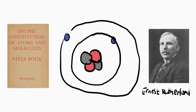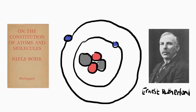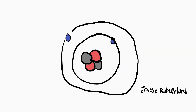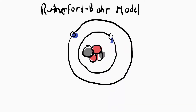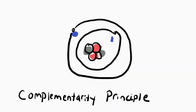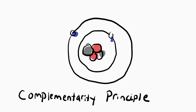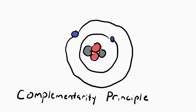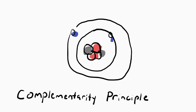Because Niels Bohr built off Rutherford's theories, this depiction of the atom is often called the Rutherford-Bohr model of the atom. Another great accomplishment by Bohr was his concept of complementarity. Although a lot less people are familiar with the complementarity principle than his atomic model, this theory is just as, if not more, important.